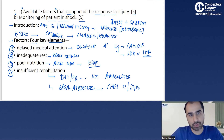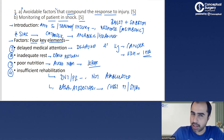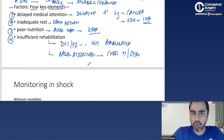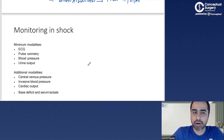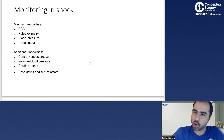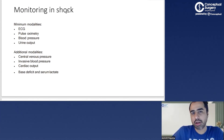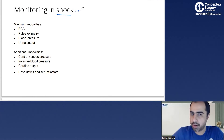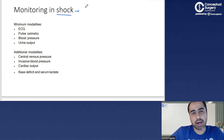That is the first part of the question. For the second part — monitoring patients in shock — you will write an introduction explaining that shock means decreased tissue perfusion.